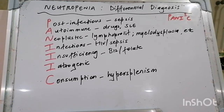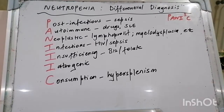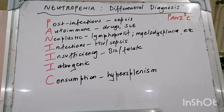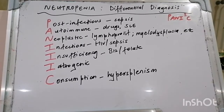What is neutropenia? The definition of neutropenia is an absolute neutrophil count below 1.5 × 10³ per microliter of blood. Severe neutropenia is defined as an absolute neutrophil count below 0.5 × 10³ per microliter.